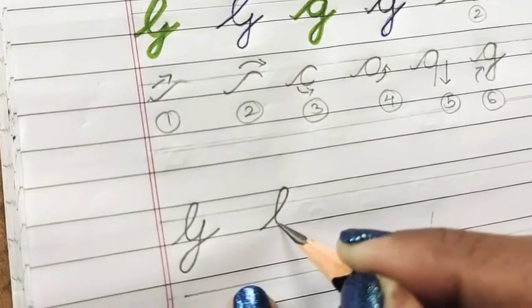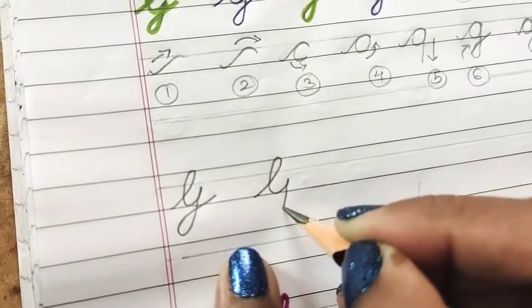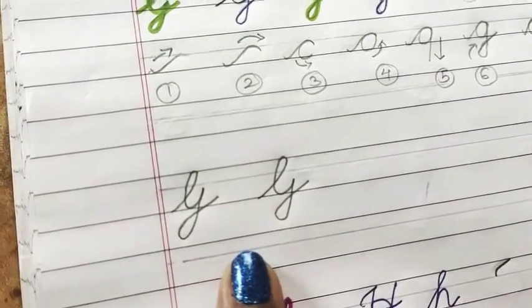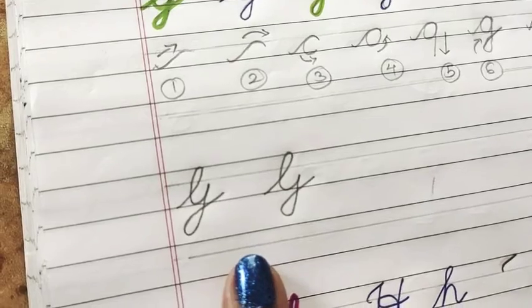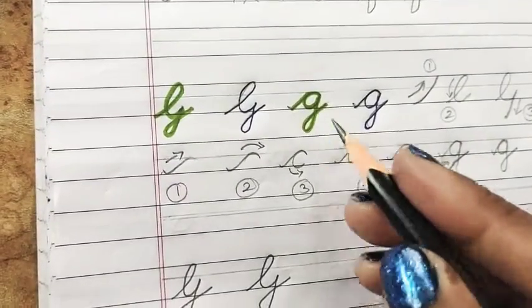Take it up, form a loop, a curve, drag it down, and a loop. And this is your capital G. Now small g. For small g, if you remember...